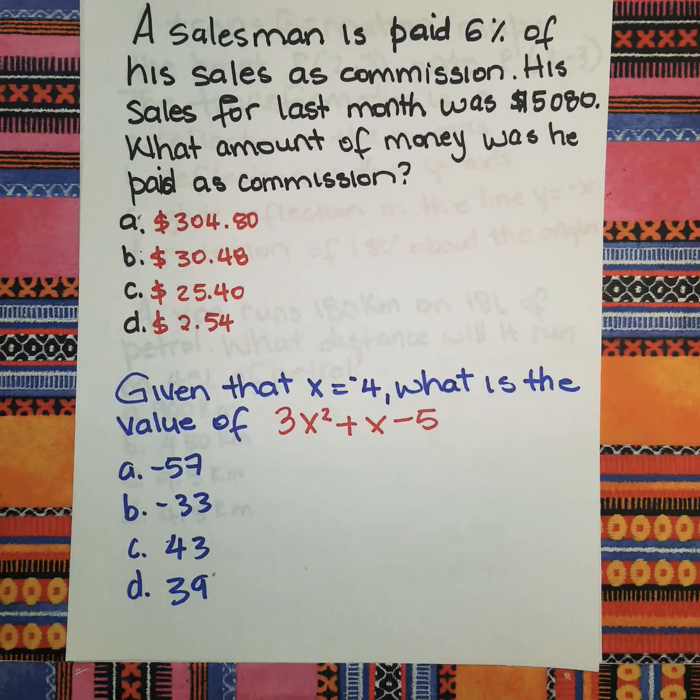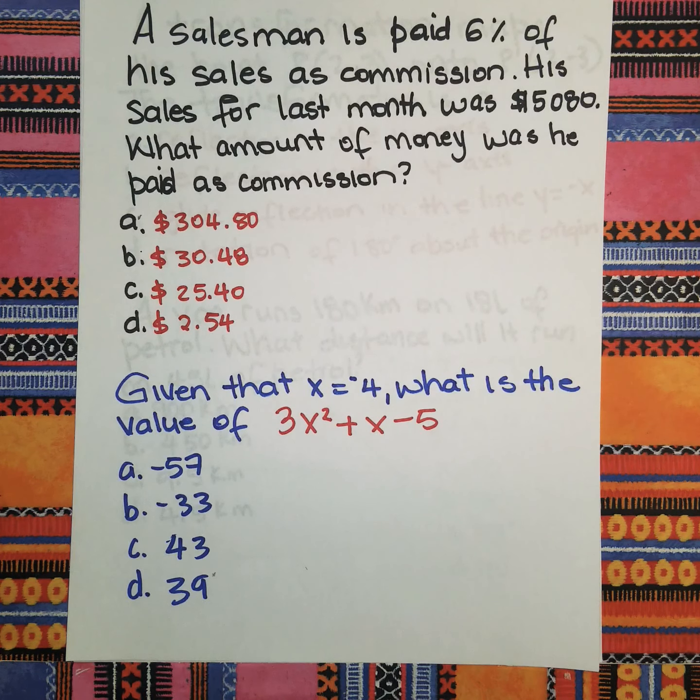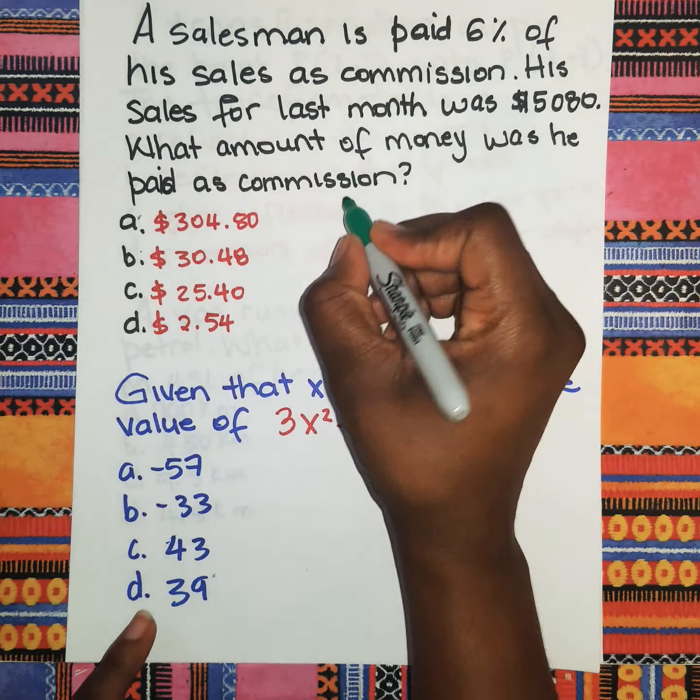The first one comes to us from commission. It says a salesman is paid 6% of his sales as commission. His sales for last month was $5,080. What amount of money was he paid as commission?